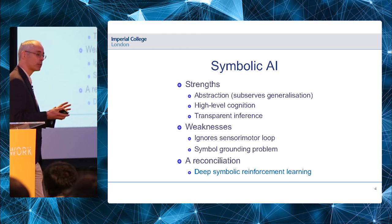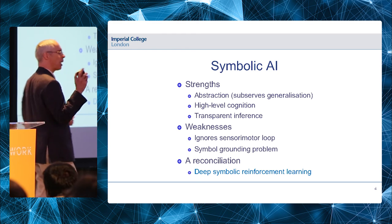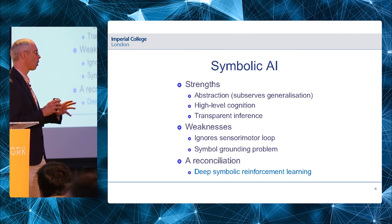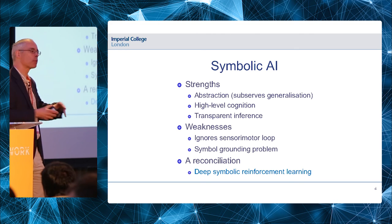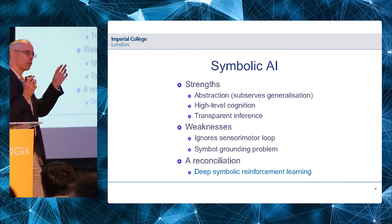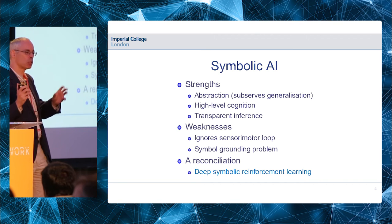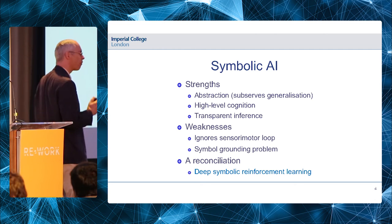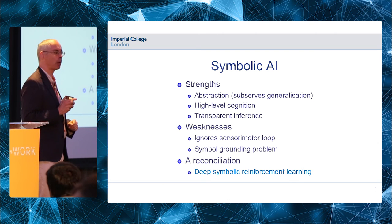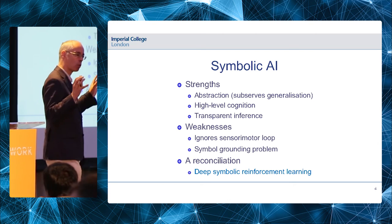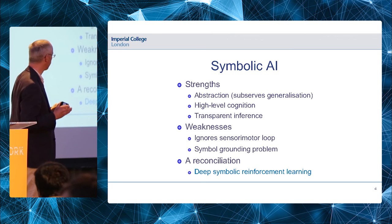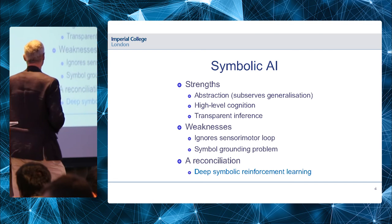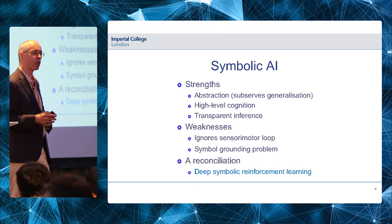Despite those strengths, I became disillusioned, largely because of weaknesses in symbolic AI. It tended to ignore the sensory-motor loop — and undoubtedly human-level intelligence is founded on interactions with a complex, dynamic real world. The really big weakness is the symbol grounding problem, coined by Stevan Harnad: the symbols — predicates, object names — were made up by the engineers. That was a fatal flaw for good old-fashioned AI in the pursuit of artificial general intelligence. It's time for a reconciliation.